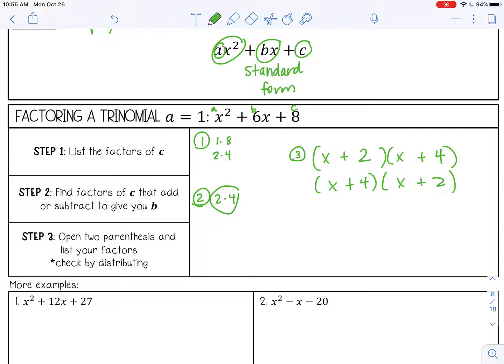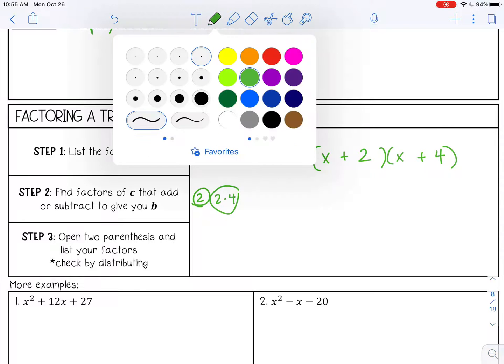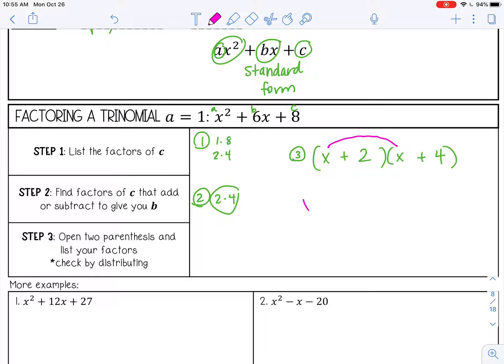So let's check here. Let's distribute back and make sure. x times x, that's x squared. x times 4, that's 4x. x times 2, 2 times 4, that's 8. We have like terms in the middle, 4x plus 2x, that's 6x. So those are our factors that we found. And we wanted it to add up to 6, and it did. And then bring everything else down. And that is what we started with. So we did it correctly.